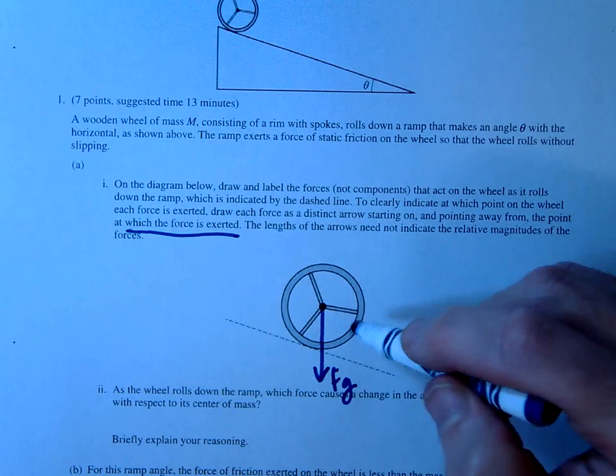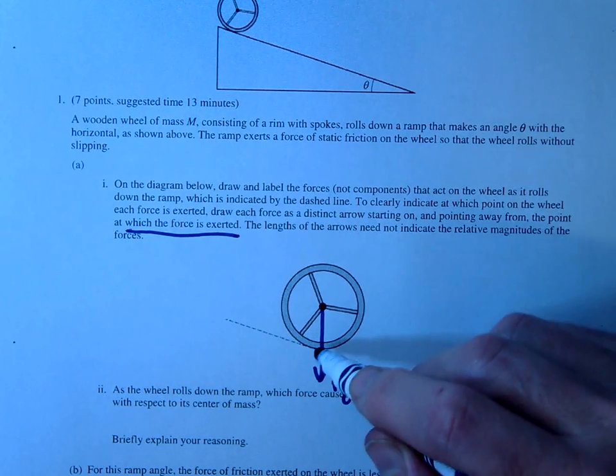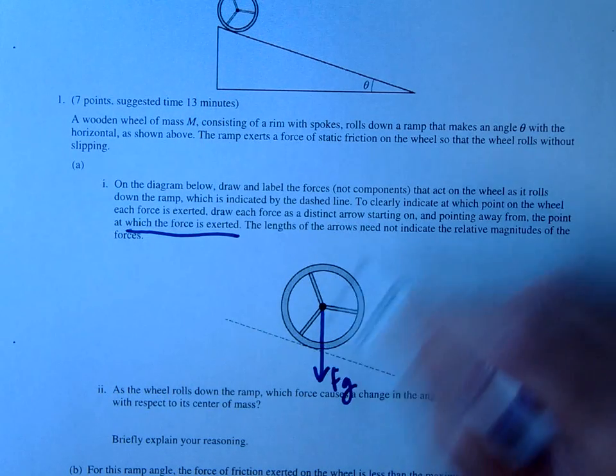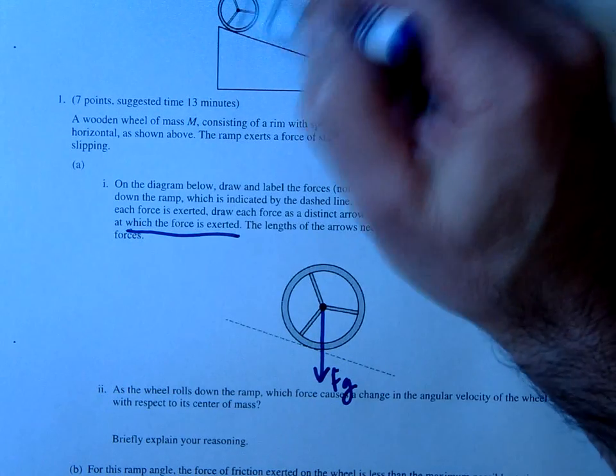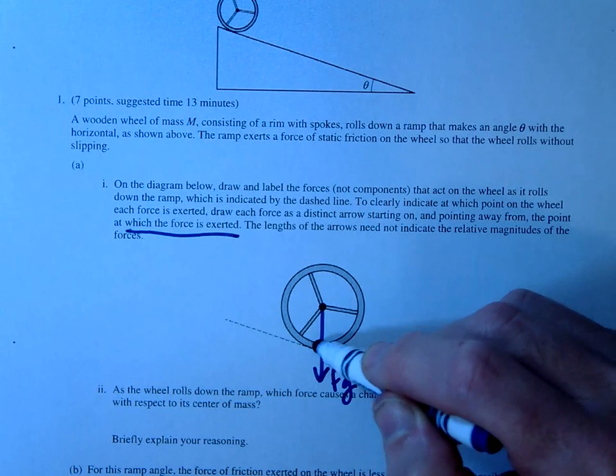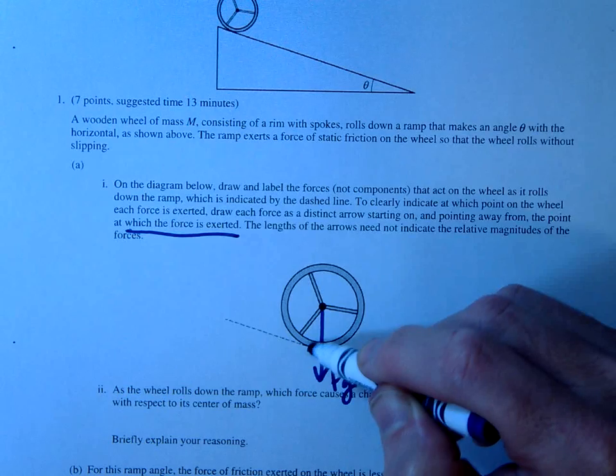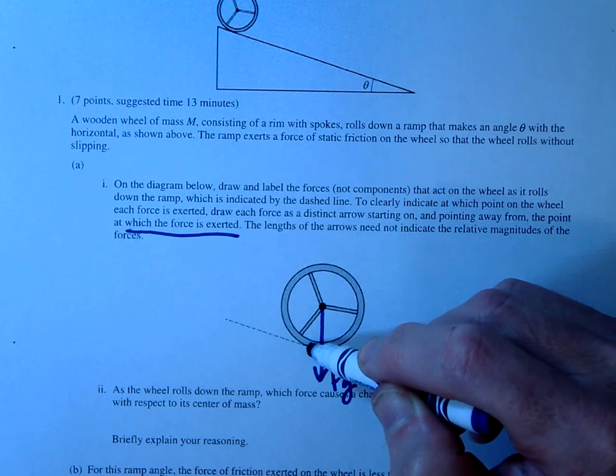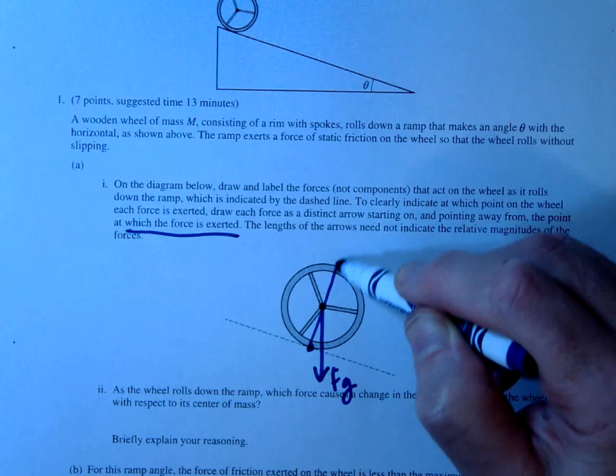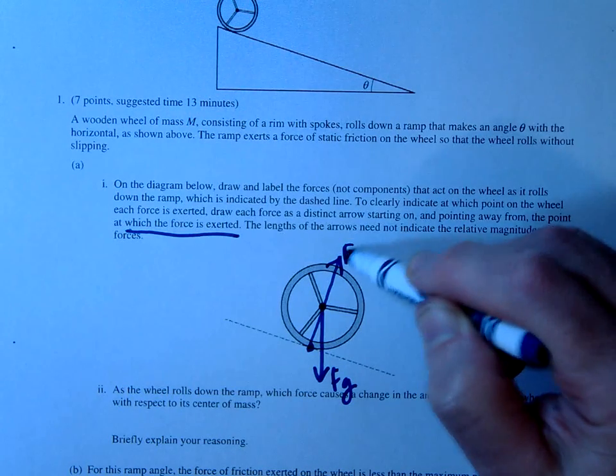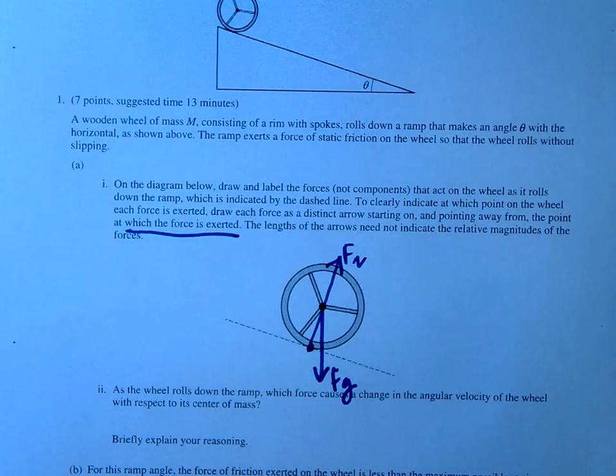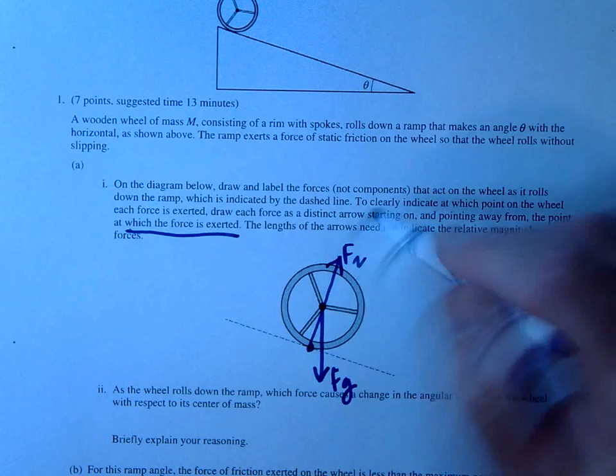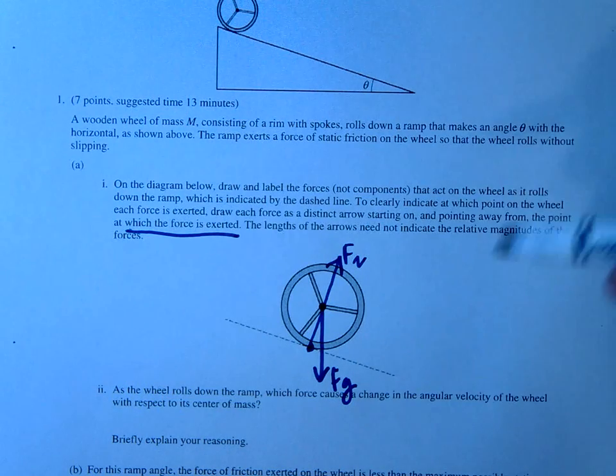The next one is going to be the normal force. Now the normal force is pushing up perpendicular to the surface and it is point of contact would be right here where it's actually touching. So the surface is touching and it's going to go up perpendicular. Notice that it should travel through that center of mass. The component will go through the center of mass and normal force.